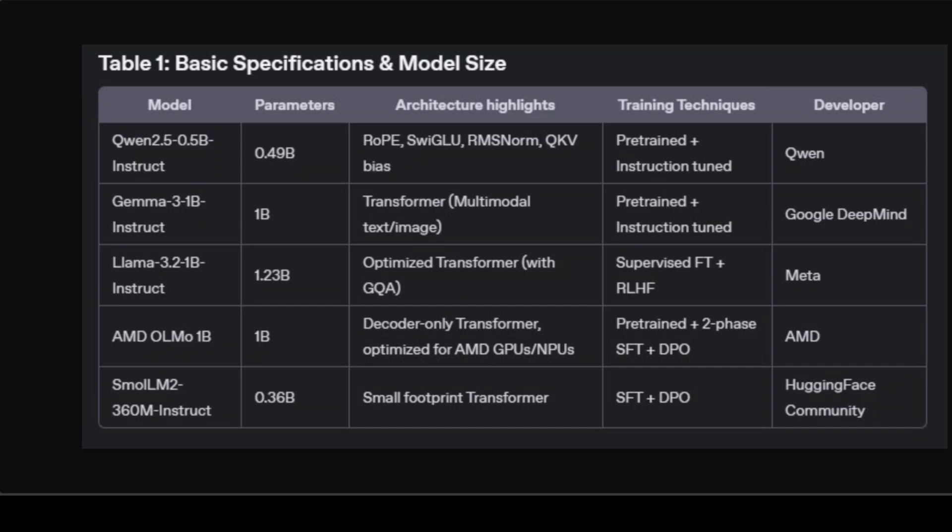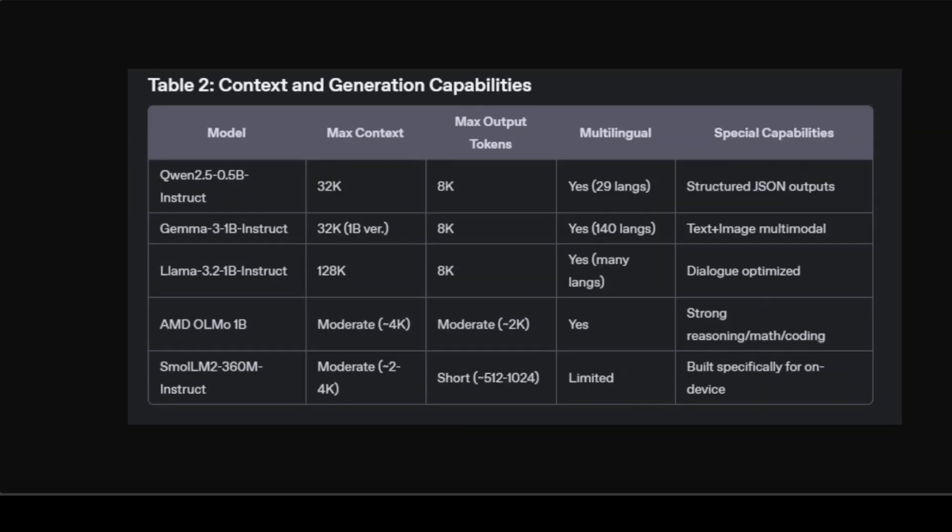All models being compared are small and accessible — under or around 1 billion parameters — and tuned specifically for local deployment. AMD OLMo is noteworthy as it is specifically optimized for AMD GPUs and designed with rigorous fine-tuning regimes, making it great for high-quality reasoning and logical tasks. Meta's Llama uses reinforcement learning with human feedback for more aligned responses and natural conversation flow. SmallLM2 from Hugging Face is a fun, enjoyable baby model to play around with, while Gemma is ideal when you want quality with a small footprint.